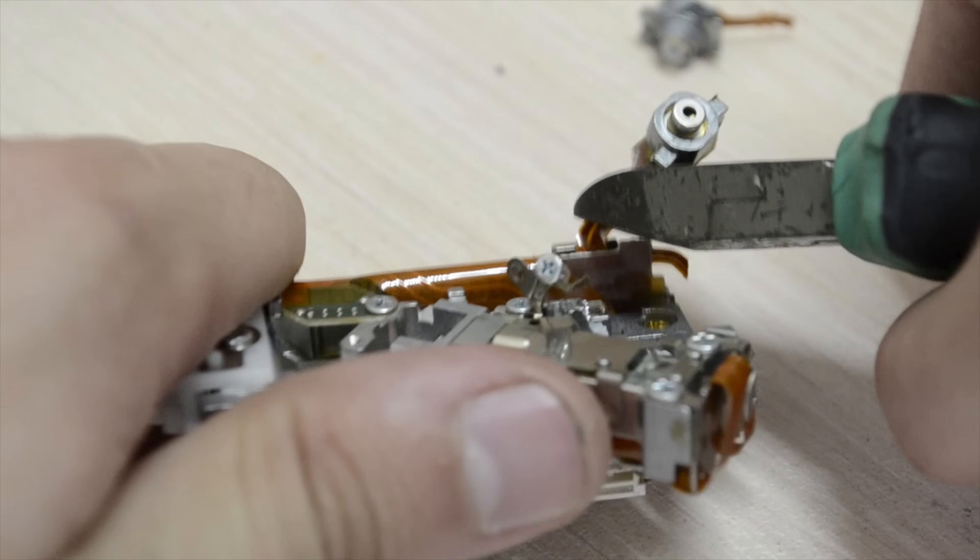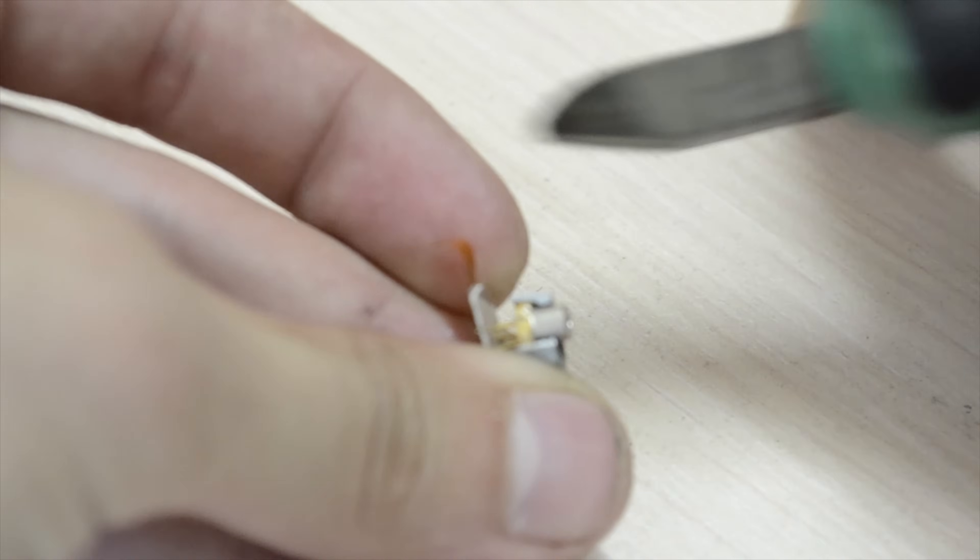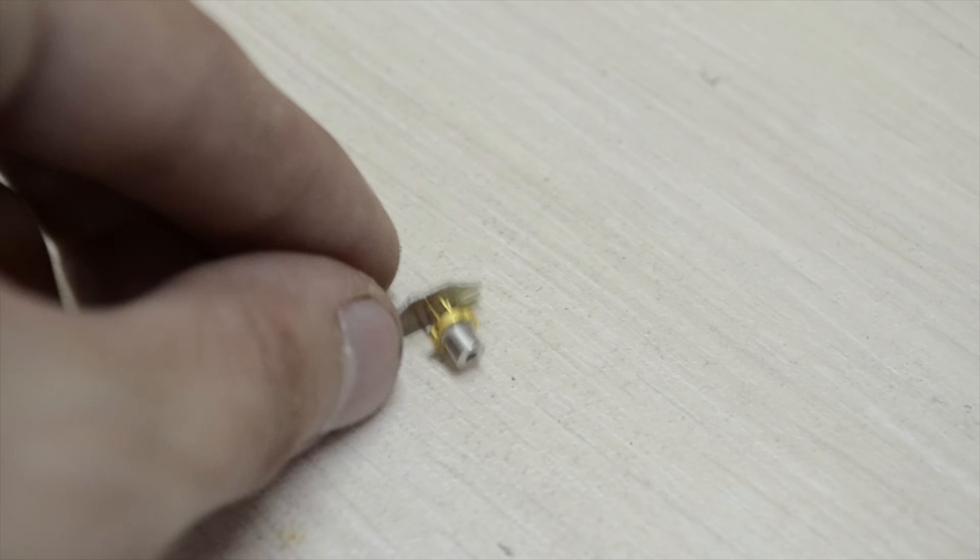Carefully take them out from heat sinks. Better before you start doing that, solder together all the diode's terminals in order to prevent damage from static electricity.